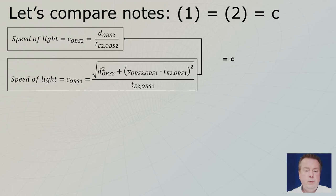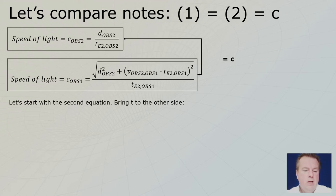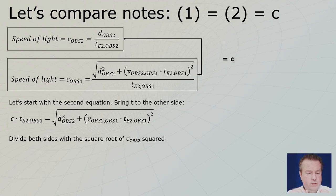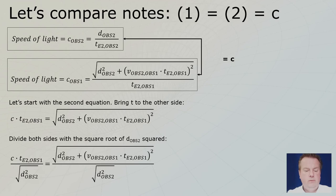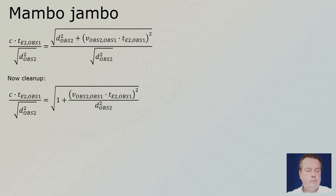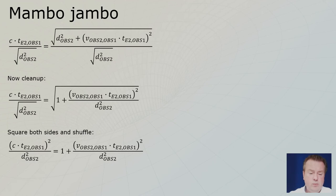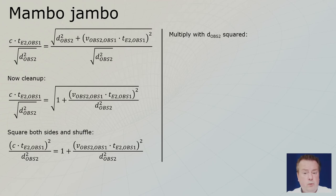Now we can compare notes. These two equations — the speed of light through observer two's eyes and through observer one's eyes — must be the same, because experiments tell us it must equal c. Starting with the second equation, we bring t to the other side. Then we divide both sides by the square root of D through observer two's eyes — which equals D through observer one's eyes. After cleanup, d-squared cancels on top and bottom, giving a one. We square both sides and do some algebraic rearranging, then multiply both sides by D-squared.